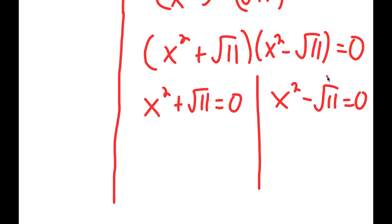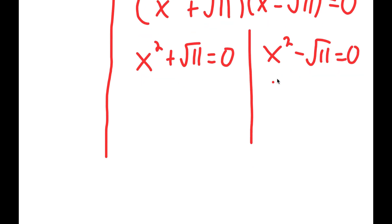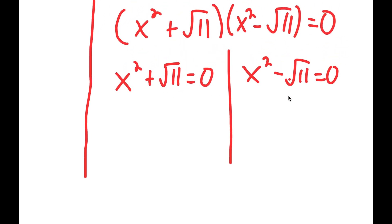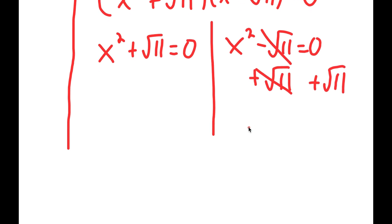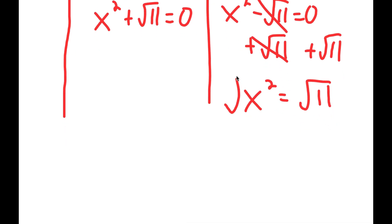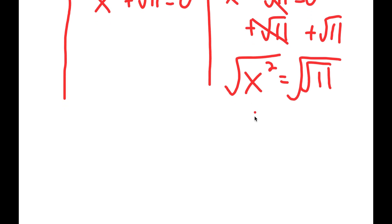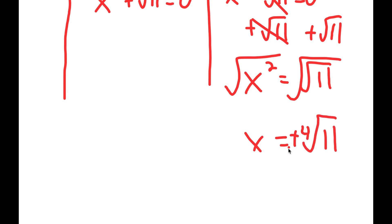For x squared minus the square root of 11 equals zero, I'm going to add the square root of 11 on both sides. So I get x squared is equal to square root of 11. Now if I take the square root on both sides, the square root of x squared is x, and the square root of the square root of 11 is the fourth root of 11. This is positive or negative.